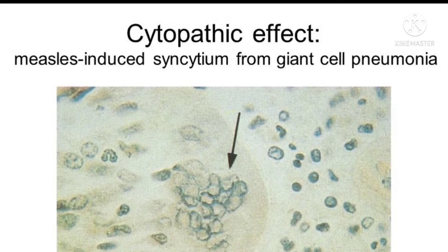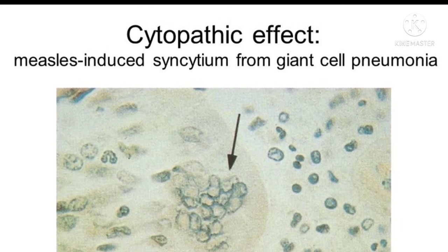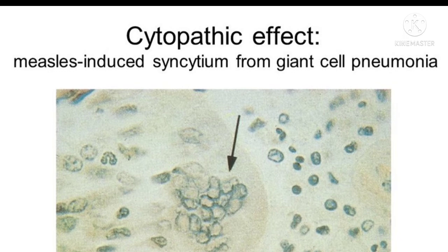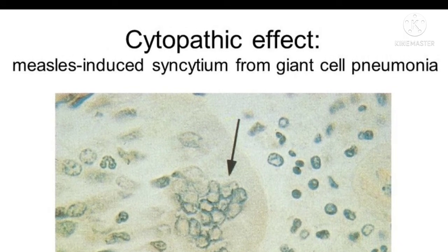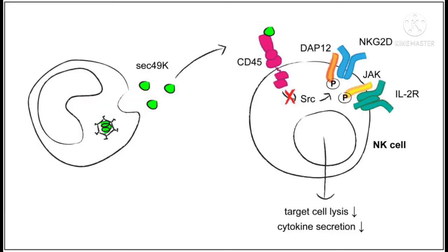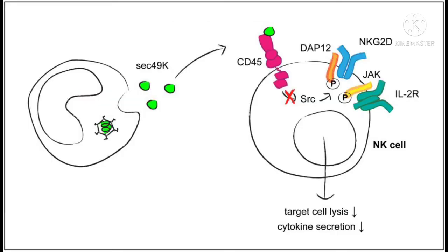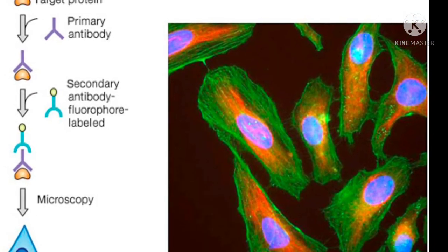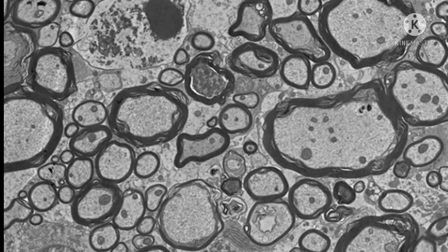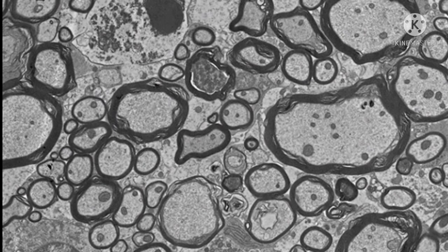Detection of virus growth in cell cultures can be detected by the following methods: cytopathic effect, hemagglutination, interference, transformation, immunofluorescence, and electron microscopy. These will be discussed in detail in the next class.